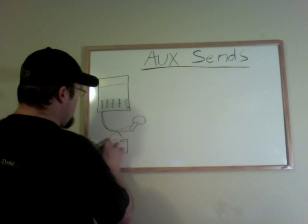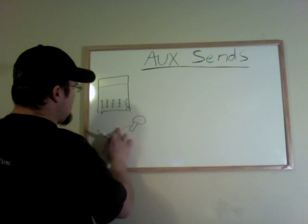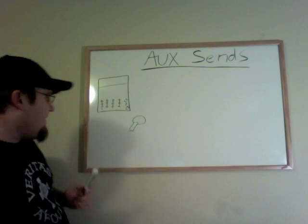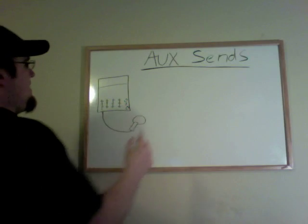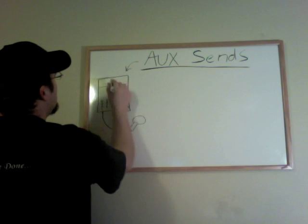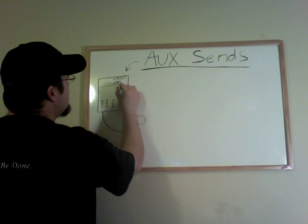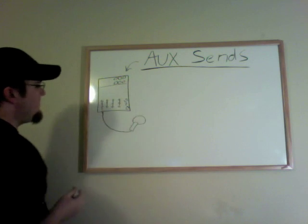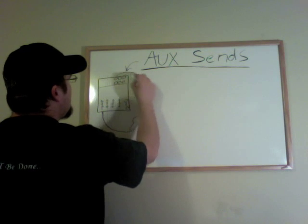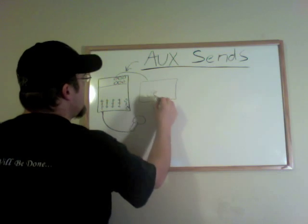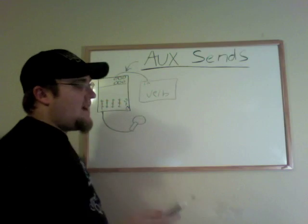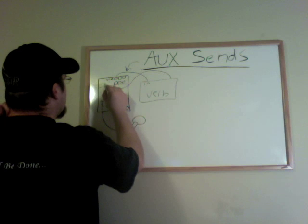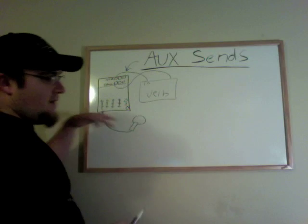But what I'm going to teach you is how to use that one reverb on several different tracks, therefore saving yourself a lot of space. We still have this microphone running into track one, but we have things called aux sends. Let's say we have a couple, and then we have aux returns — sometimes they're called effects sends, sometimes just sends. So instead, we're going to go out aux send one into the input on the reverb, and then the output of the reverb is going to go into the return. This is the send, this is the return — out the out, in the in.